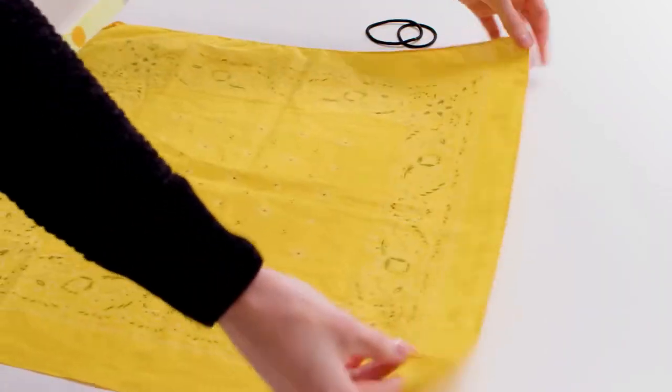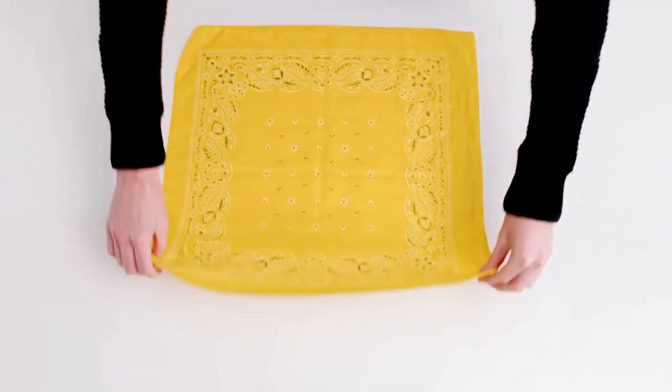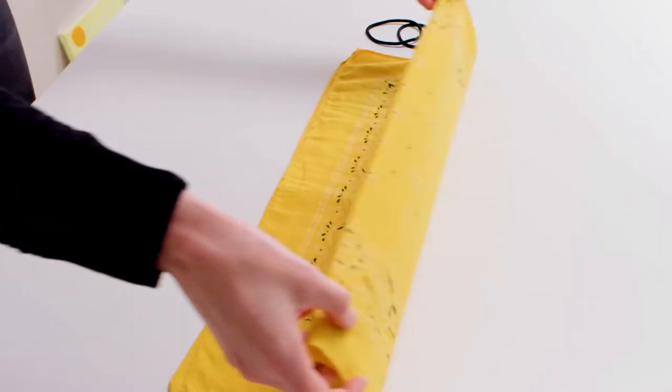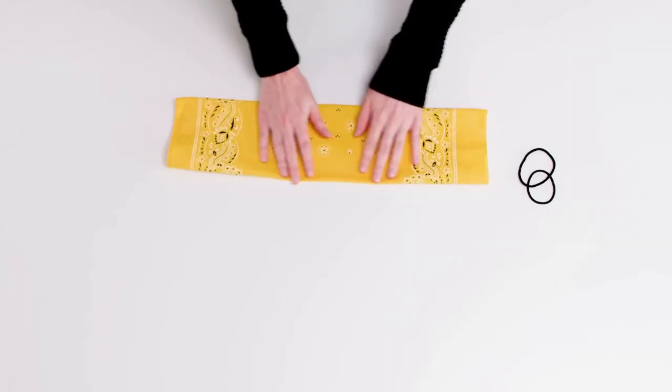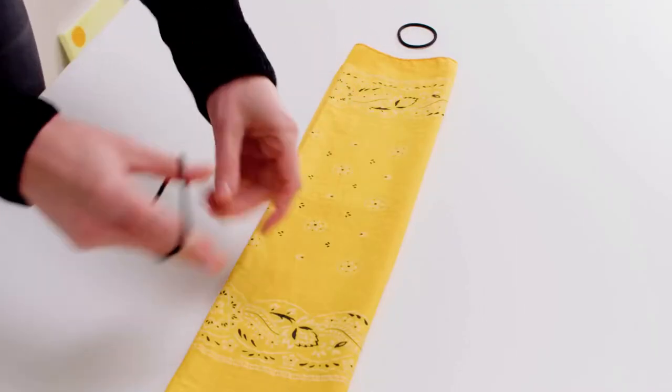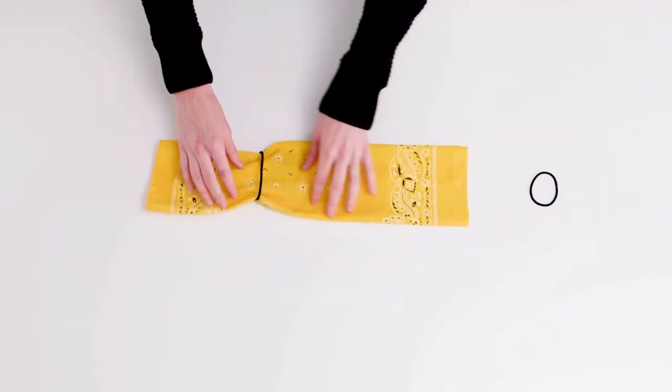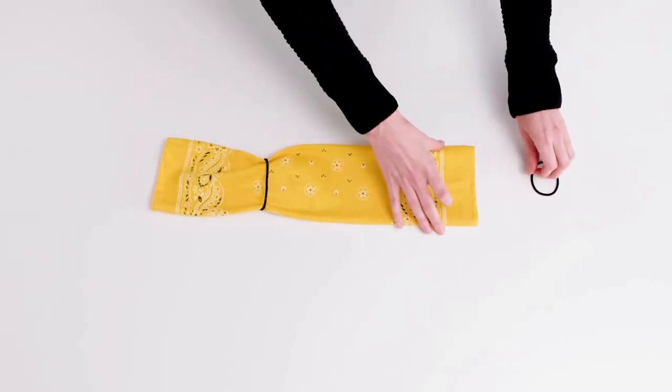Lay the cloth square out flat. Fold it in half, then half it again. Take one of the hair ties or rubber bands and wrap it around the cloth, pulling it through the center of the hair tie or rubber band.